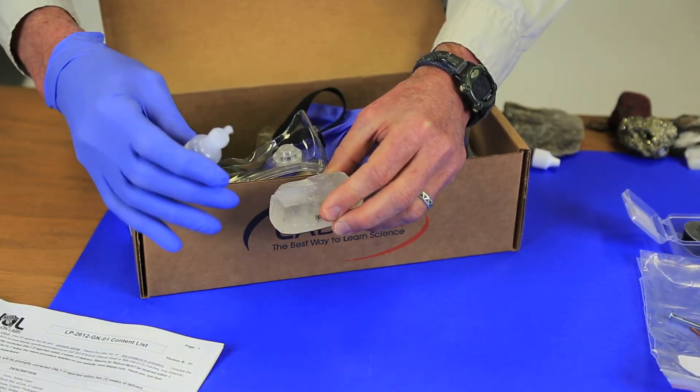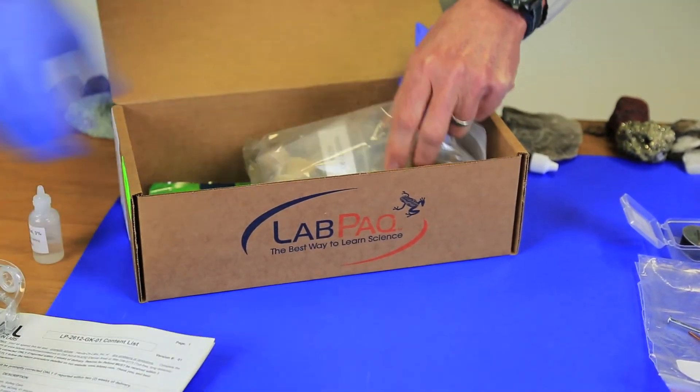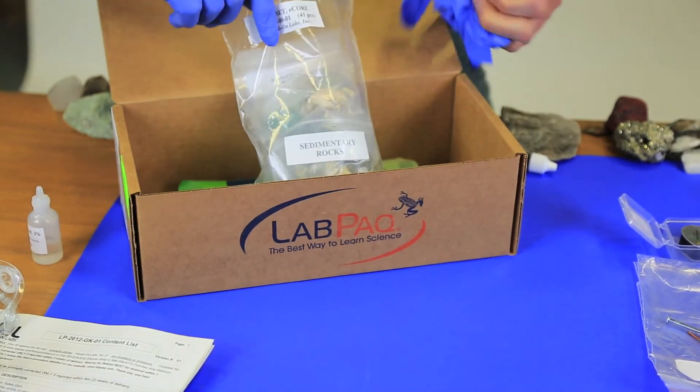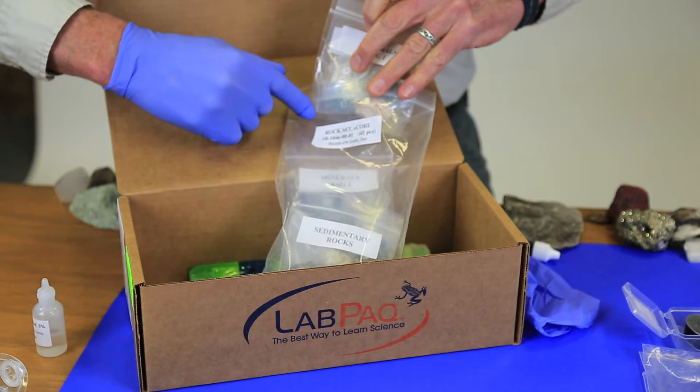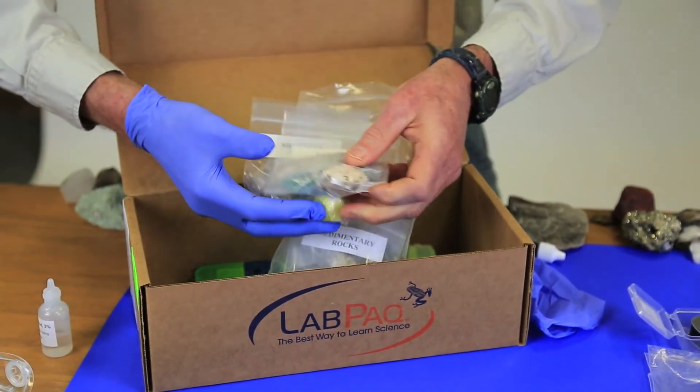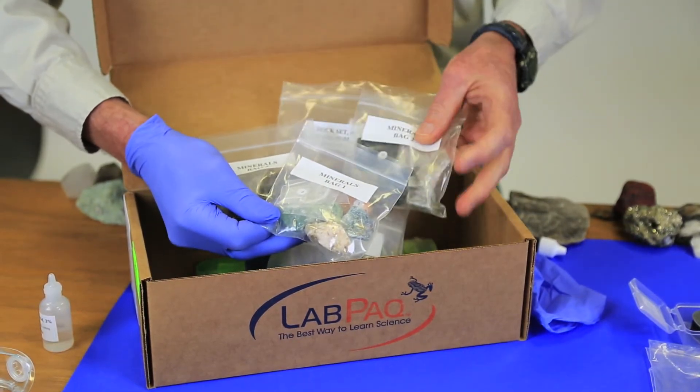When you look at the actual specimen, you're going to see everything in small bags that are inside one bag that's labeled a rock set. Now this is a little bit misleading—it's not only the rocks but it also contains your minerals. The minerals will be the first thing that we work with and they're labeled individually inside mineral bag one, two, and three. So that's what we'll be working with today.